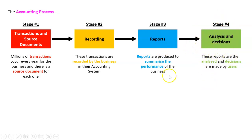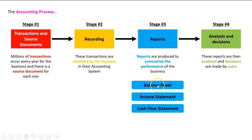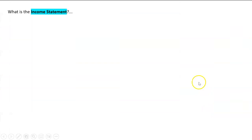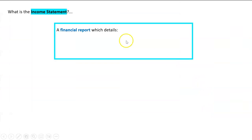We've done the balance sheet, but there are actually two other reports — one's called the income statement and one's called the cash flow statement. We don't need to be experts on those now; we just want a brief overview of the inventory part of the income statement. The income statement is a financial report which details the revenues earned by the business.